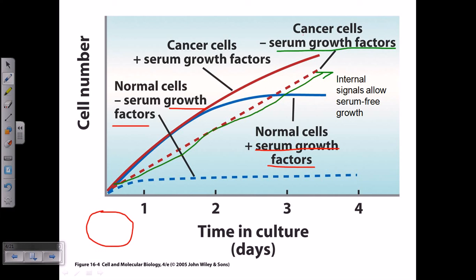If we add serum growth factor along with the cancer cells, it's a bonanza for them — they thrive exponentially. These cells are literally immortal; if we continuously supply food sources as a growth medium and serum growth factors, they will keep growing rapidly. This is the difference between normal cell growth and cancerous cell growth: cancer cells are exponential, they thrive because contact inhibition is never there, and loss of growth regulation takes place inside these cancer cells.